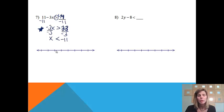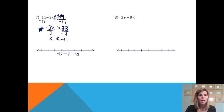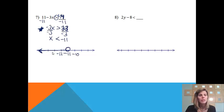We graph it to show all the answers that would work. We start at negative 11 and put some numbers on either side. We're not including negative 11 because there's no equal sign — it's an open circle. All the numbers less than negative 11 are to the left on the number line. That's how that answer looks.